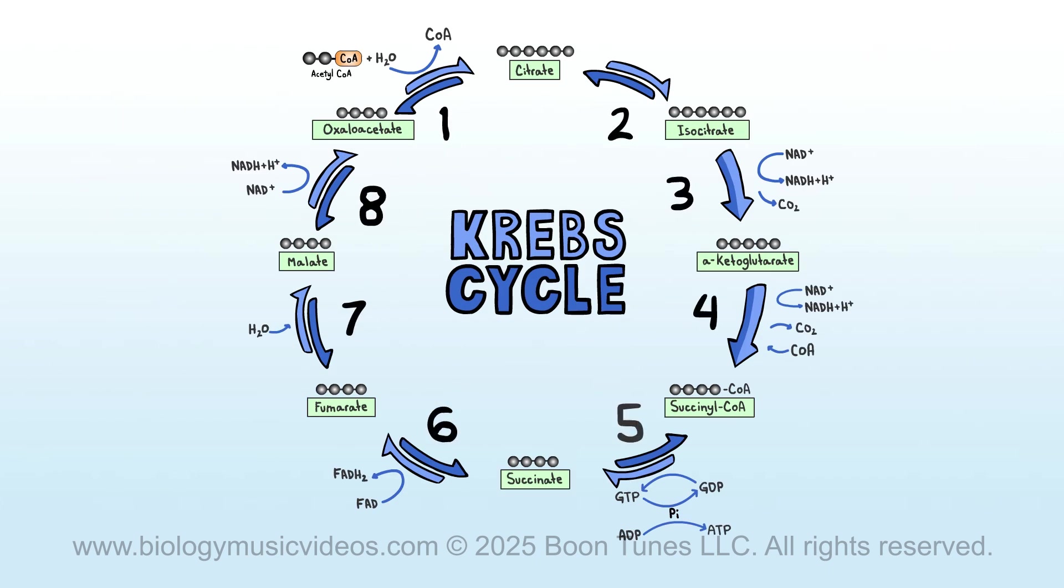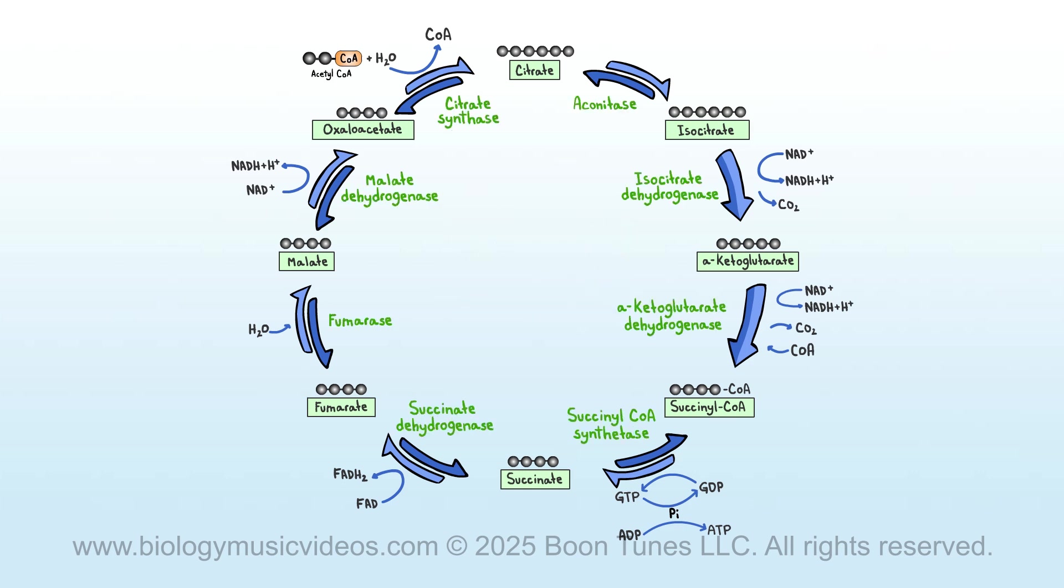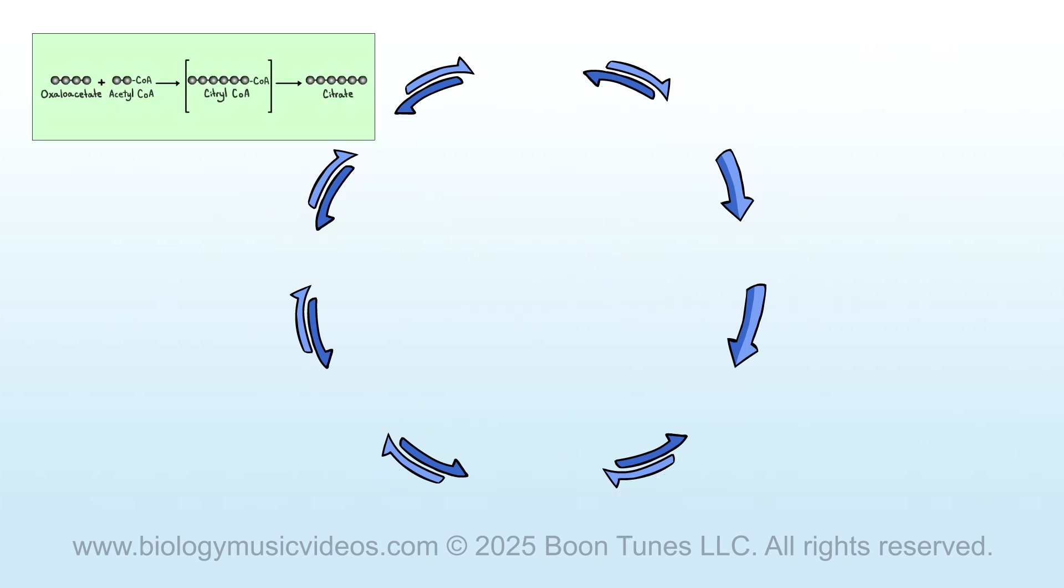The Krebs cycle has eight major steps. They're all important. And don't forget that each and every step we define takes place with the help of enzymes. The first reaction that takes place begins with oxaloacetate, a starting compound which contains four carbon atoms in its chain. The oxaloacetate, or OAA, condenses with acetyl-CoA. Then CoA is removed, which generates the six-carbon compound called citrate.